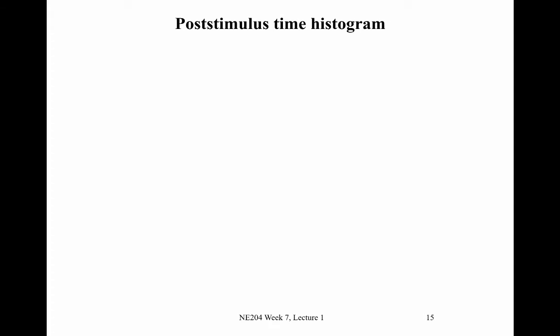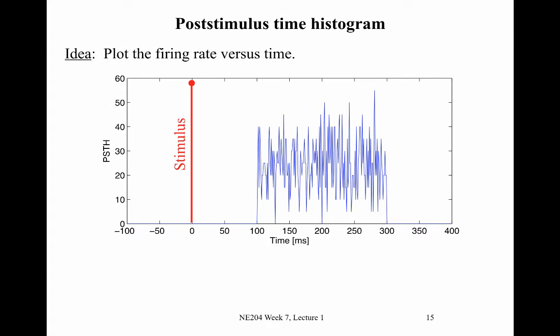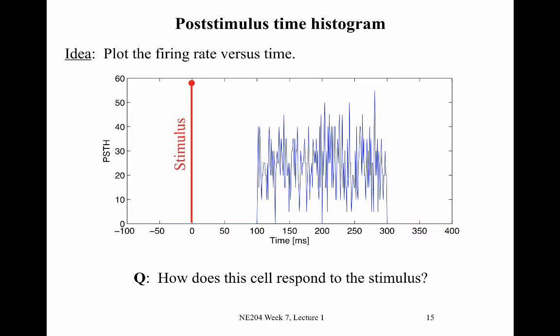The last measure is the post-stimulus time histogram, or PSTH, which plots firing rate versus time. On the vertical axis is the PSTH and on the horizontal axis is time in milliseconds. We can ask how the cell responds to the stimulus: the stimulus occurs at time zero, and in this example there's a large increase in firing rate at about 100 milliseconds post-stimulus, spiking from 100 to 300 milliseconds, then turning off. The units of the PSTH — worth thinking about — are spikes per second or hertz.